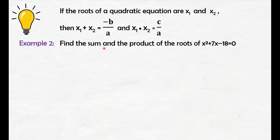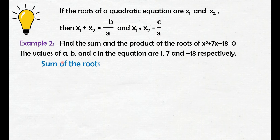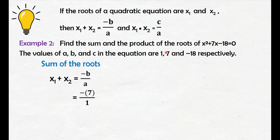Example number 2. Find the sum and the product of the roots of x squared plus 7x minus 18 equals 0. The values of a, b, and c in the equation are 1, 7, and negative 18 respectively. Same question as example 1 — it is asking for the sum and product, not the roots themselves. Using the formula, substitute the value of b and a: b is 7 and a is 1. Negative 7 divided by 1 is negative 7.